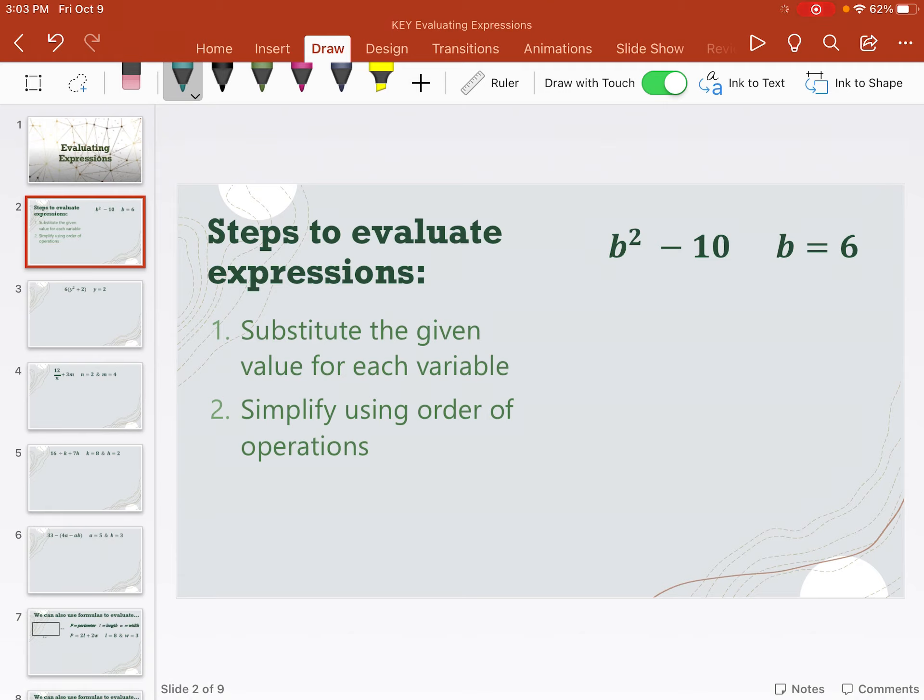So I am going to rewrite the problem, b squared minus 10. It says that b equals 6. So I'm going to rewrite it, but anywhere I see a b, I'm going to put a 6 in instead. So 6 squared minus 10. Then I'm going to simplify using order of operations. Order of operations says exponents first. This is 6 times 6, which is 36.